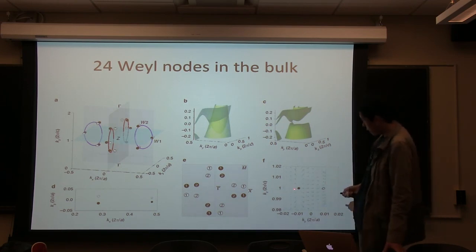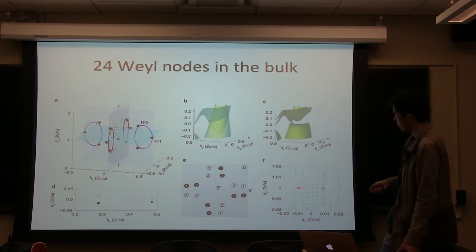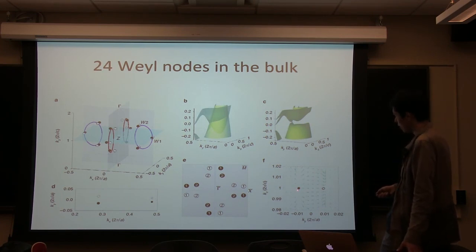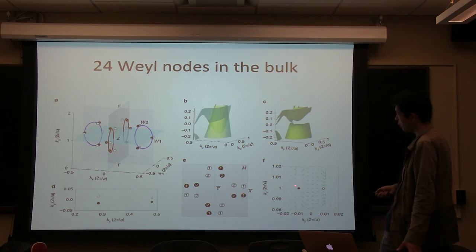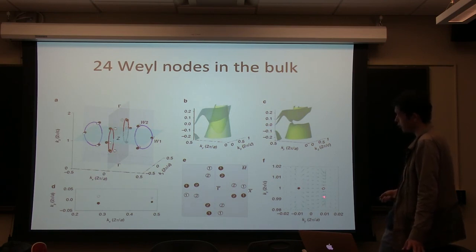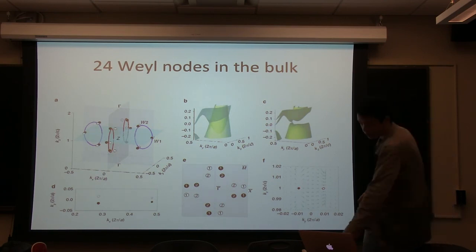We can also calculate the distribution of Berry flux in the vicinity of two of the Weyl nodes. We see that one serves as a source and the other as a sink — they really behave like monopoles and anti-monopoles of the Berry flux.